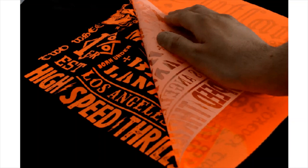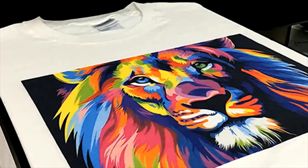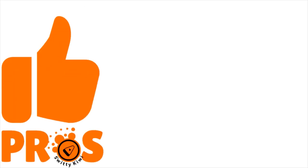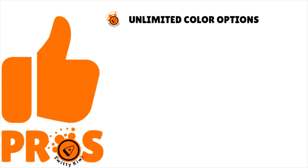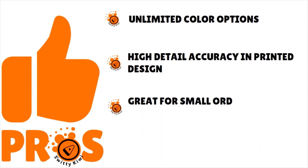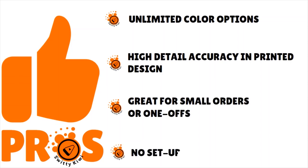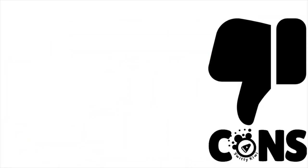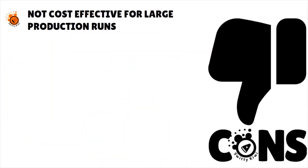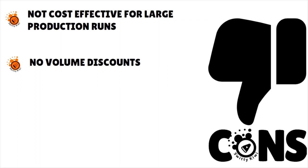The third category is direct-to-garment, DTG. This operates much like an inkjet printer and is a common type of t-shirt print business equipment because it prints ink directly onto the t-shirt and can produce full color images with accuracy. The pros: unlimited color options, high detail accuracy in printed design, great for small orders or one-offs, and no setup cost. The cons: not cost-effective for large production runs and no volume discounts.